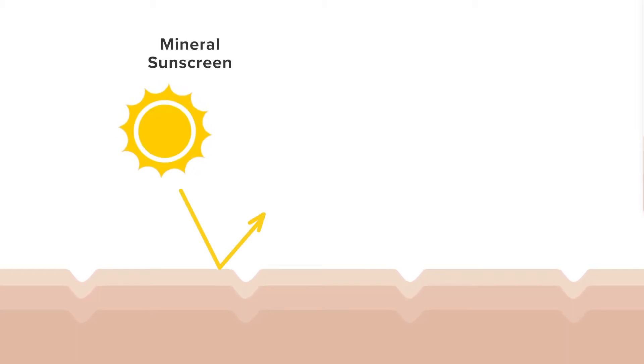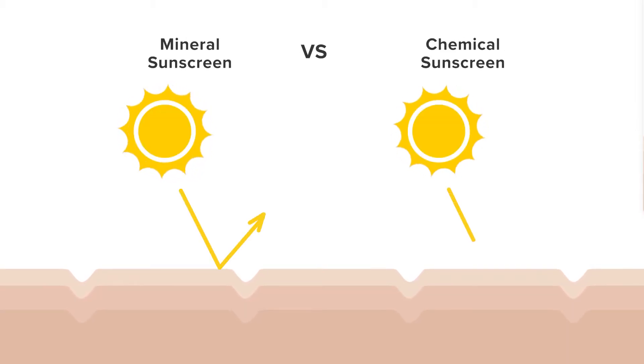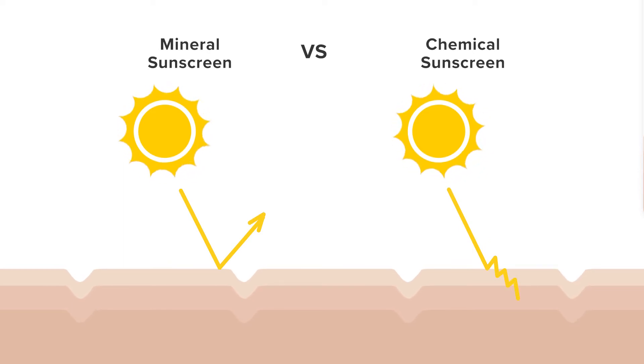There are two types of sunscreen to know about: mineral sunscreen, also known as inorganic filters, and chemical sunscreen, also known as organic filters. Mineral sunscreen works by reflecting sun energy, whereas chemical sunscreen works by absorbing sun energy.